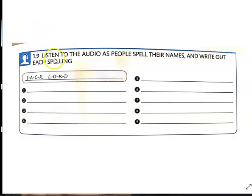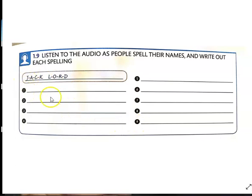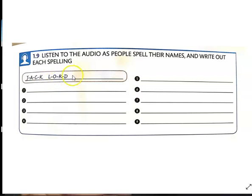In lesson 1.9, we're going to listen to the audio as people spell their names and write out each spelling. In the first one we have an example, so the name is Jack Lord. Numbers 1 through 9, you are going to spell out the names that you hear. The audio is going to say a name and then you're going to spell it out — for example, Jack: j-a-c-k, Lord: l-o-r-d.